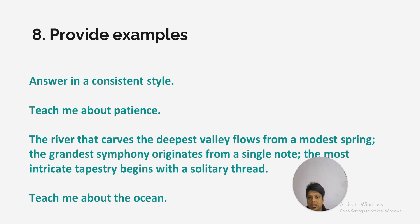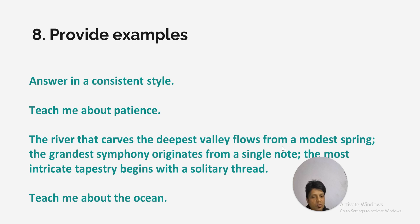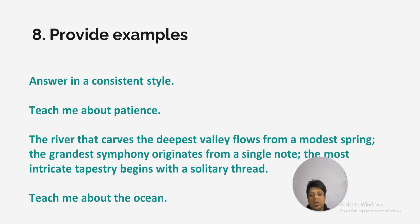It's always better to give examples to ChatGPT so it understands exactly what you want. For example, you first give the prompt 'teach me about patience' and then provide an example: 'the river that carves the deepest valley flows from a modest spring; the grandest symphony originates from a single note; the most intricate tapestry begins with a solitary thread.' Then when you ask 'teach me about the ocean', ChatGPT understands the style you prefer for learning.